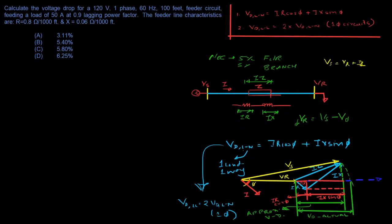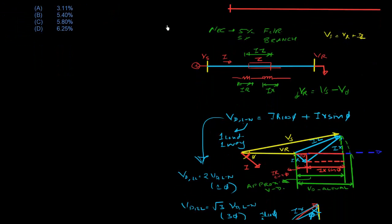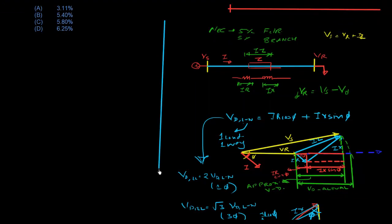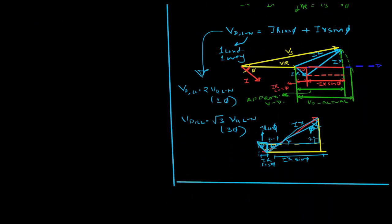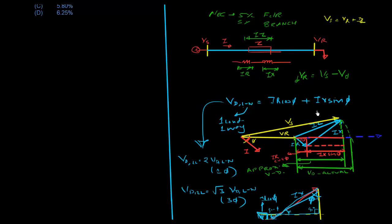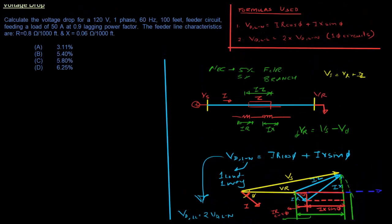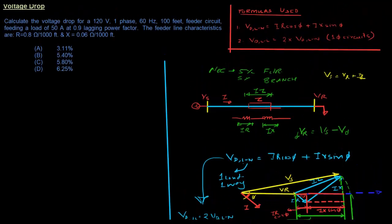That's a bit of the theory behind voltage drop. I hope it gives you a better understanding of where the formula V_D = I·R·cos(phi) + I·X·sin(phi) comes from. Now let's use this formula in our problem.